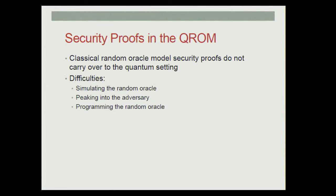Unfortunately, classical random oracle model proofs do not carry over into the quantum setting. I'd like to highlight a few difficulties in actually transferring classical proofs to quantum proofs. The first is simulating the random oracle. On even the first query a quantum adversary can make to the random oracle, he could query it on a superposition of all possible inputs. This means if we want to produce an oracle that looks random to the adversary, we need to generate a random output for each of the exponentially many inputs — and generating an exponential amount of randomness is impossible to do efficiently.